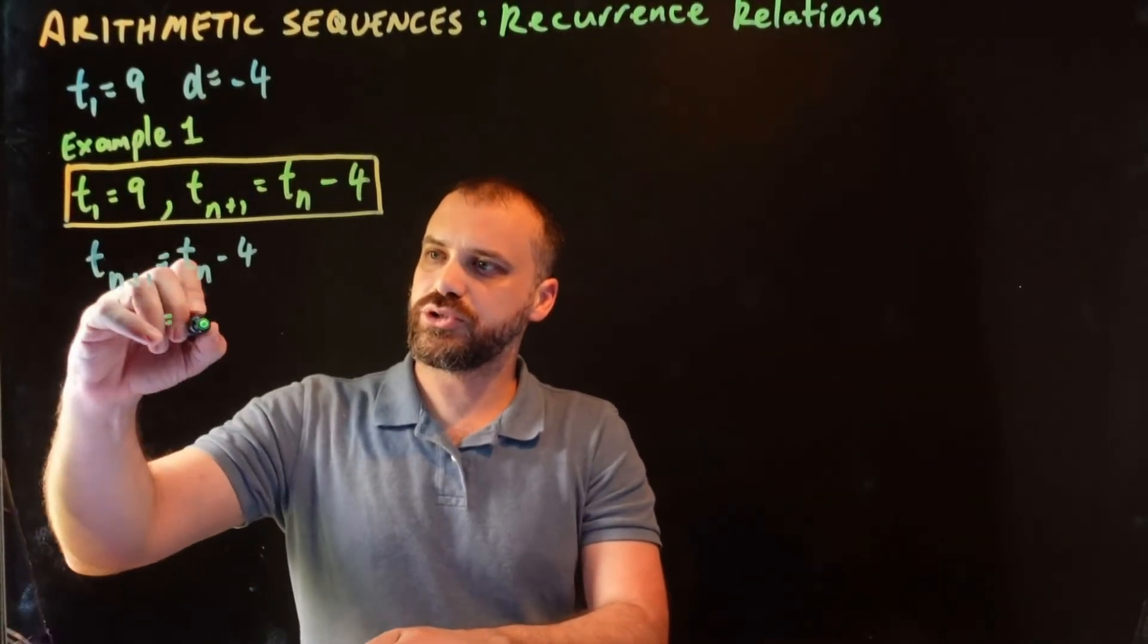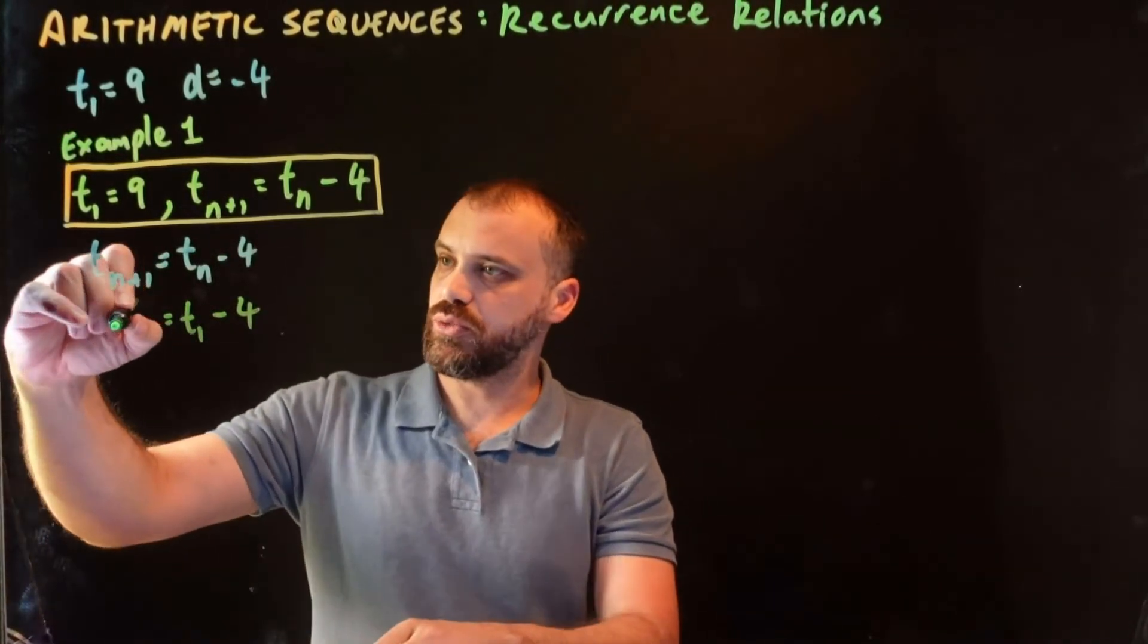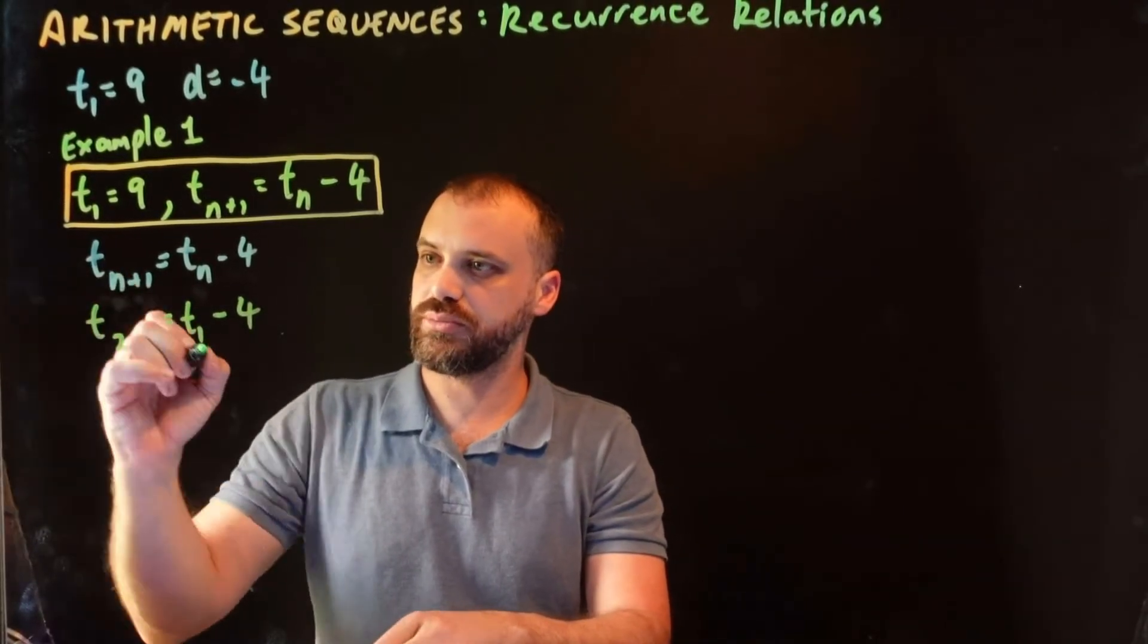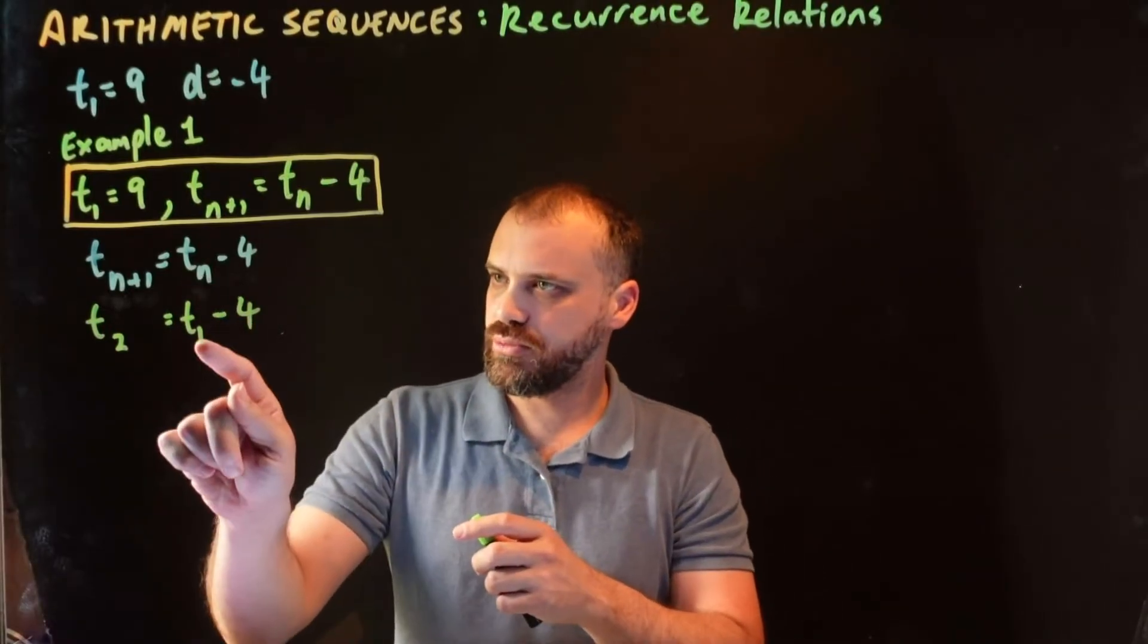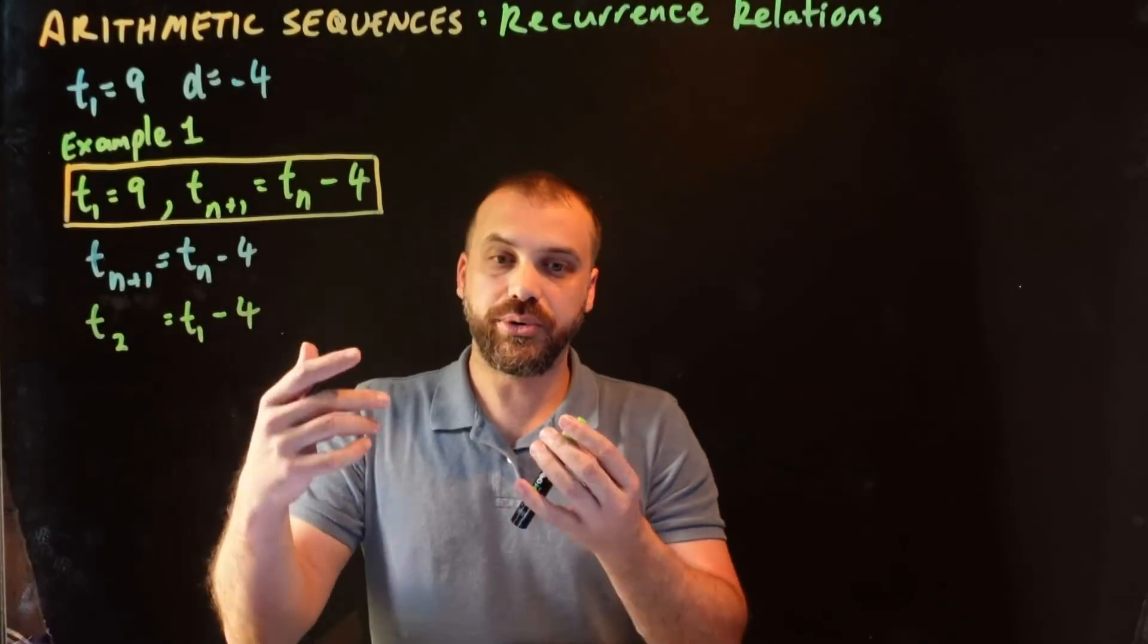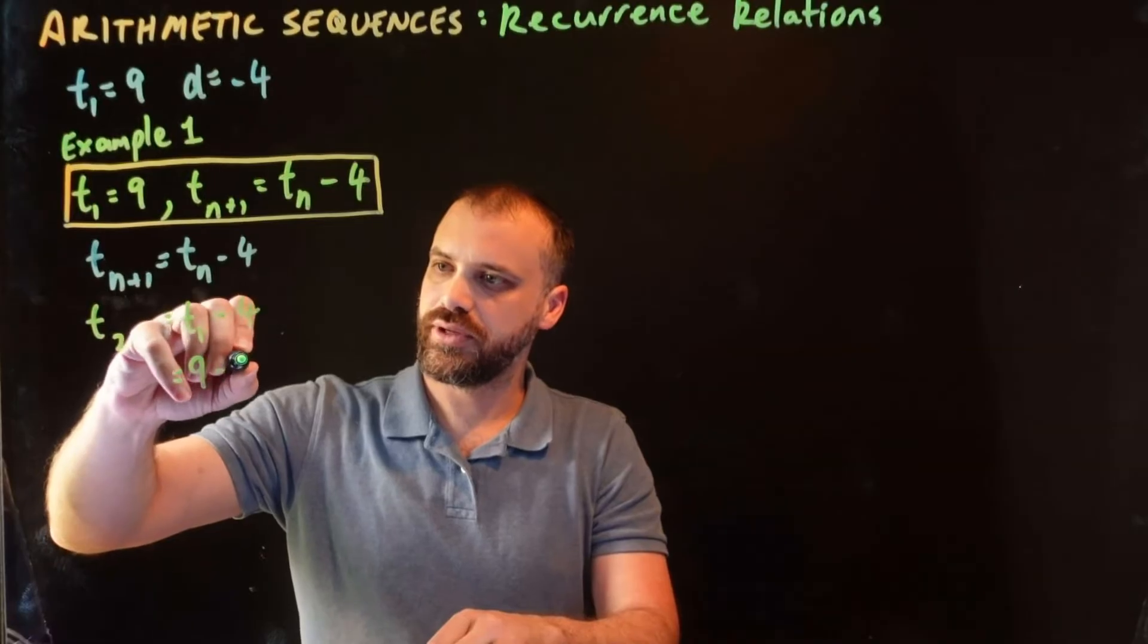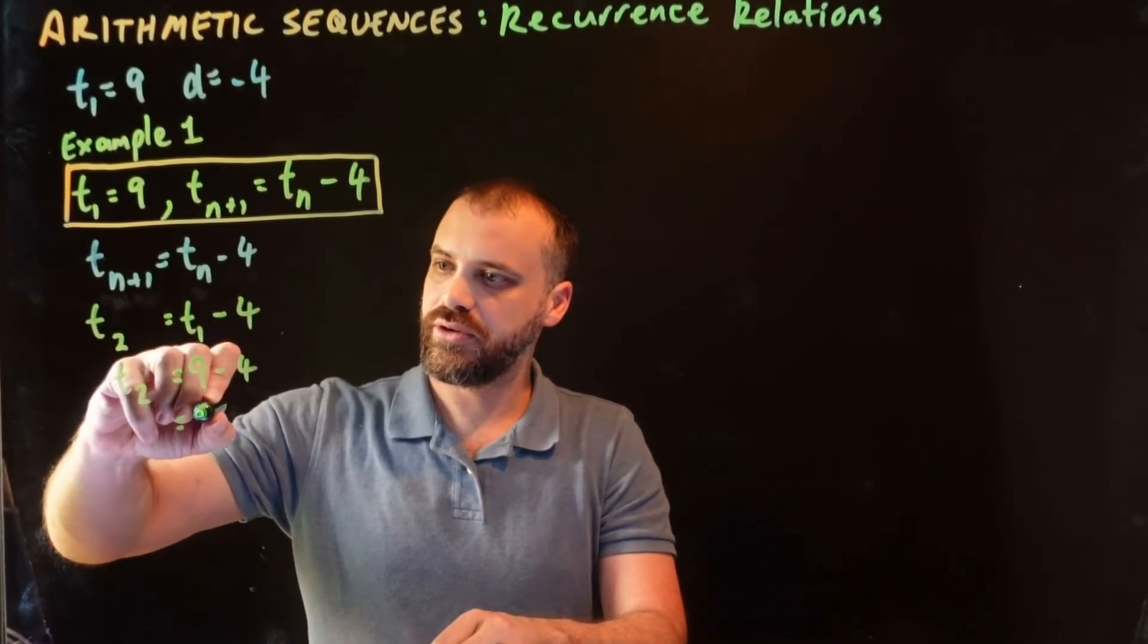We know what term 1 is, and if we sub term 1 in, we'll be able to find term 1 plus 1, which is term 2. See what's going on here? Term 1, so I've just chosen, I want to know what the first term is. Well, I know what the first term is. The first term is 9, and if I subtract 4 from it, I'll know what the second term is, 5.